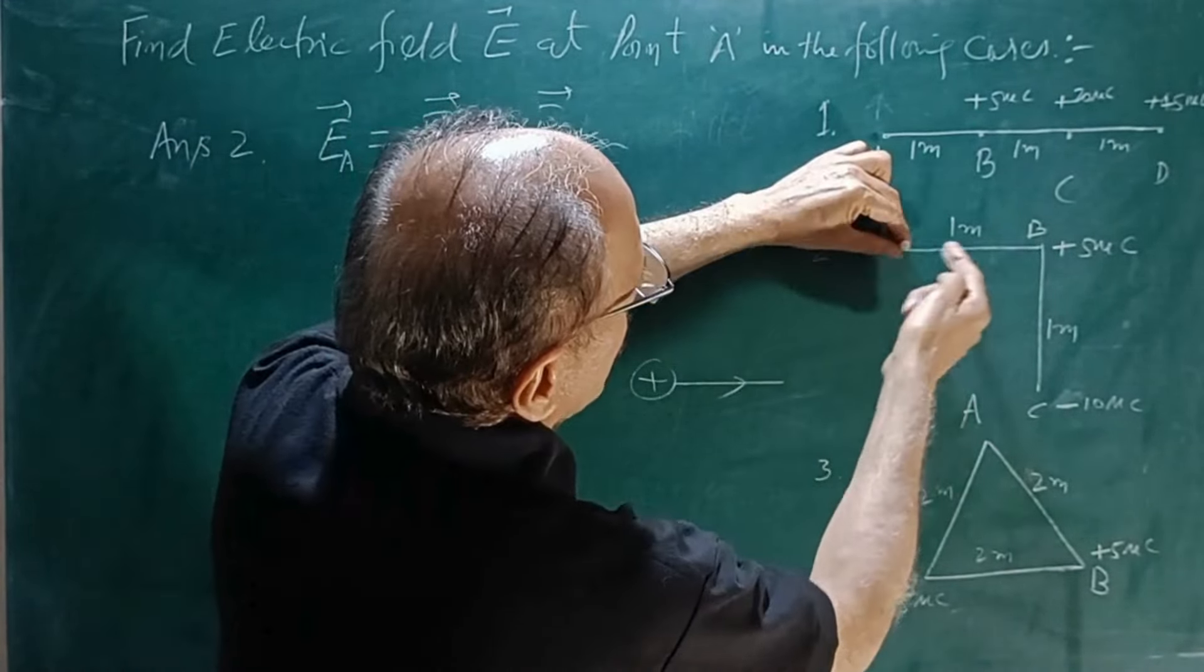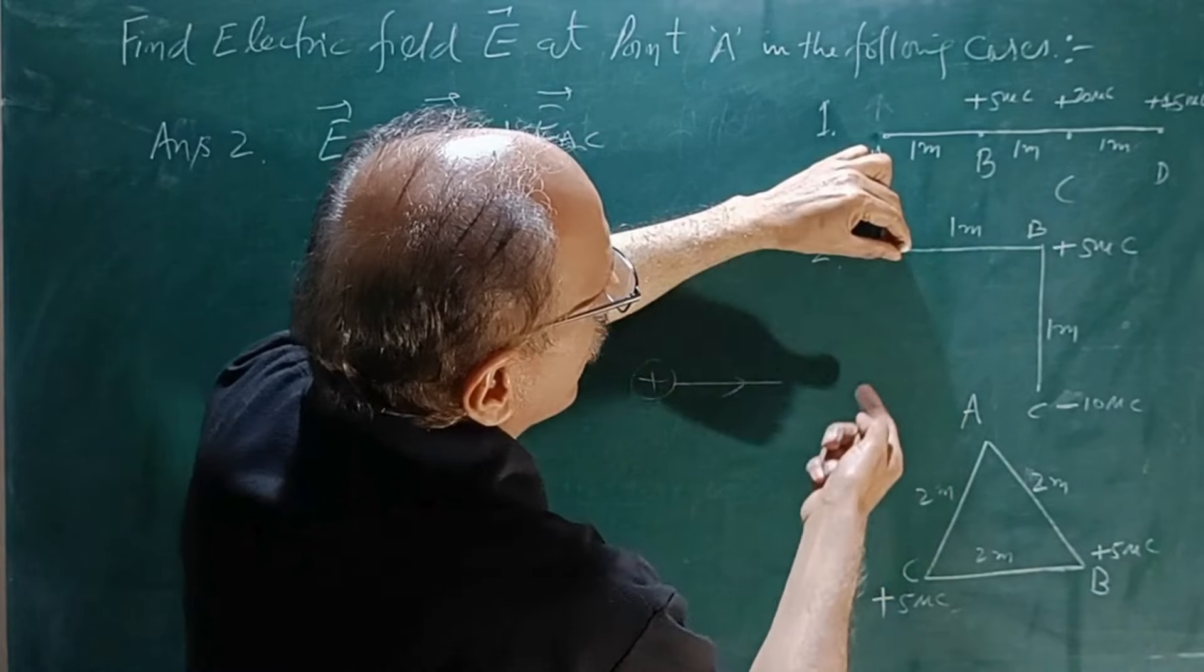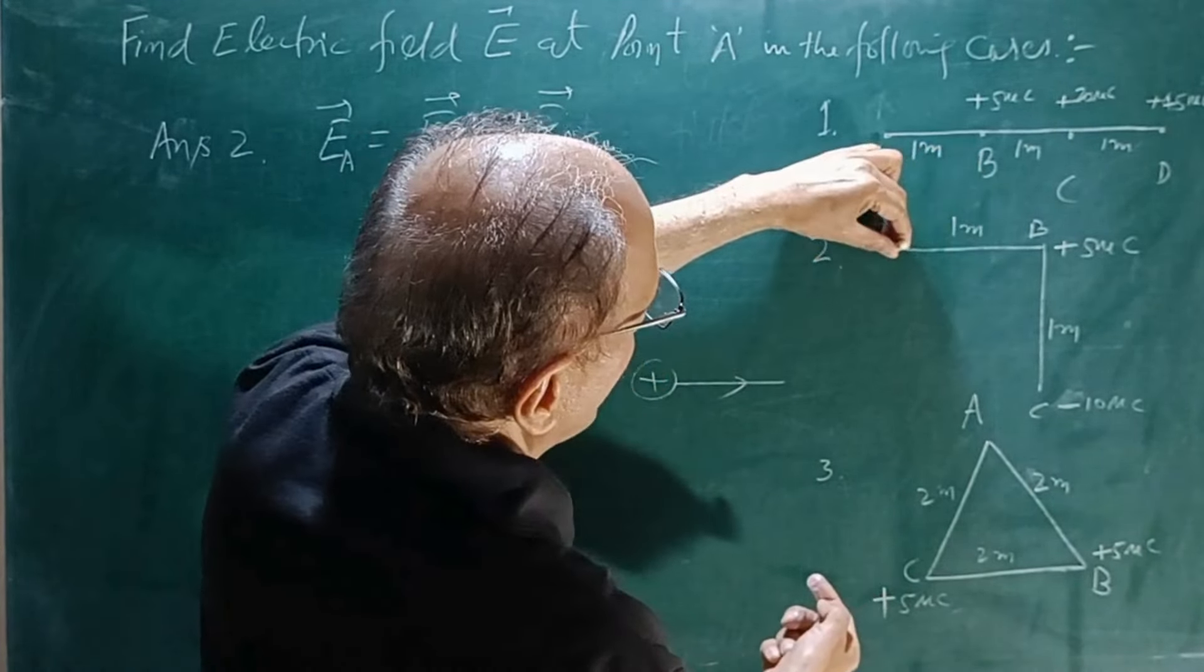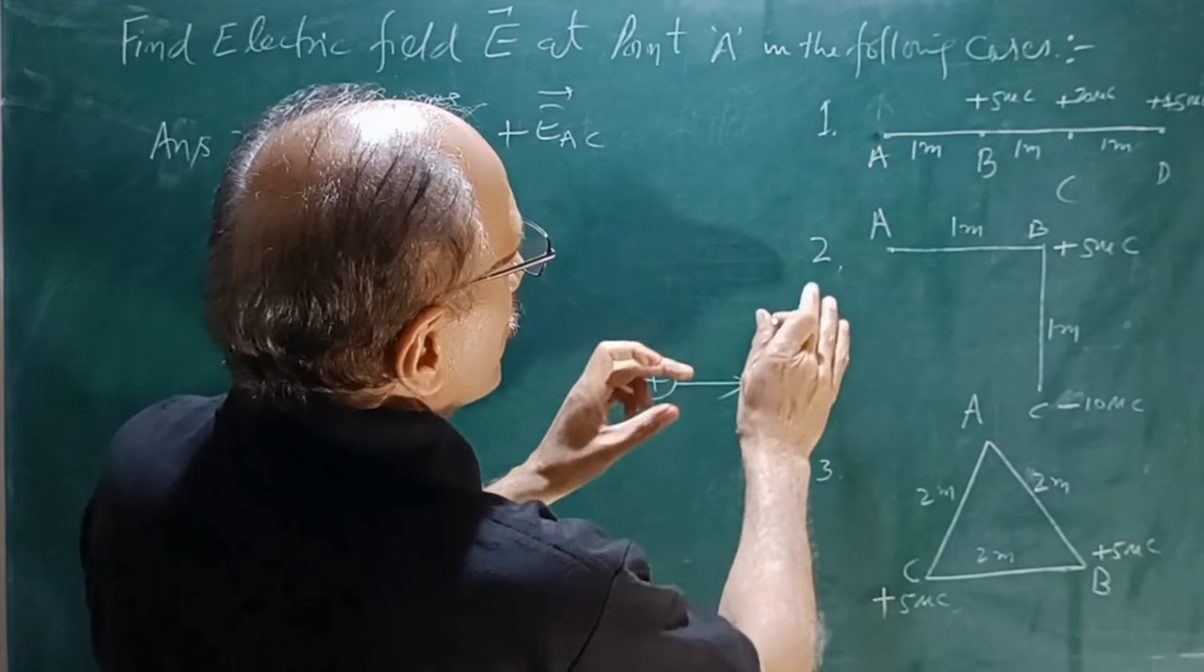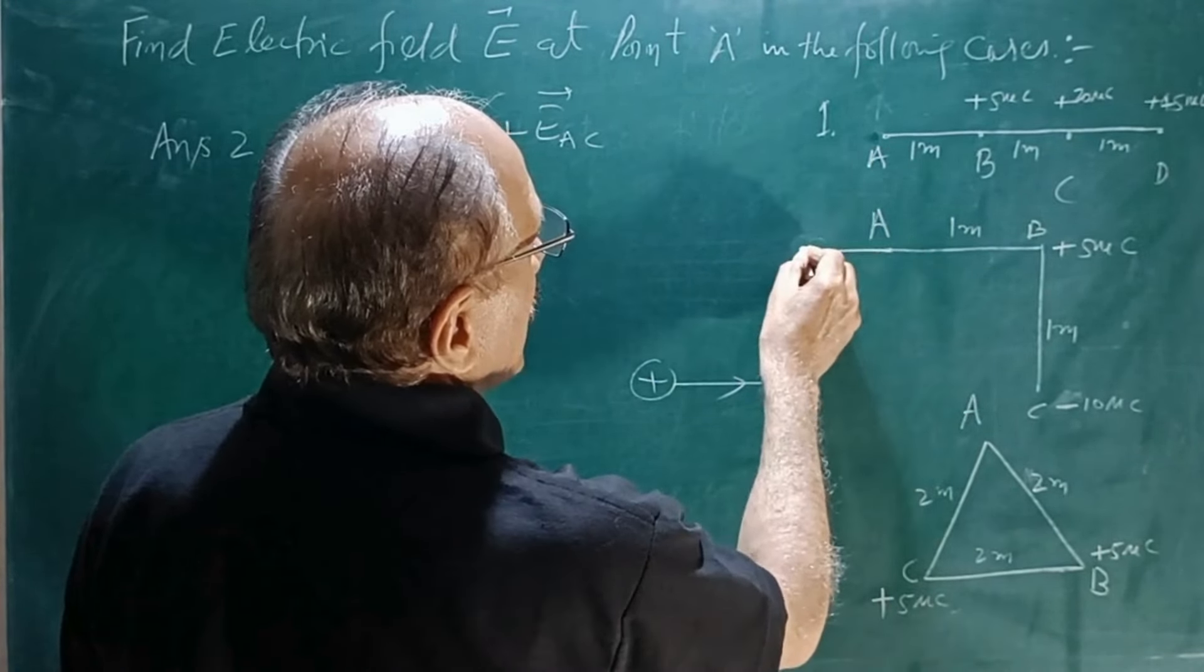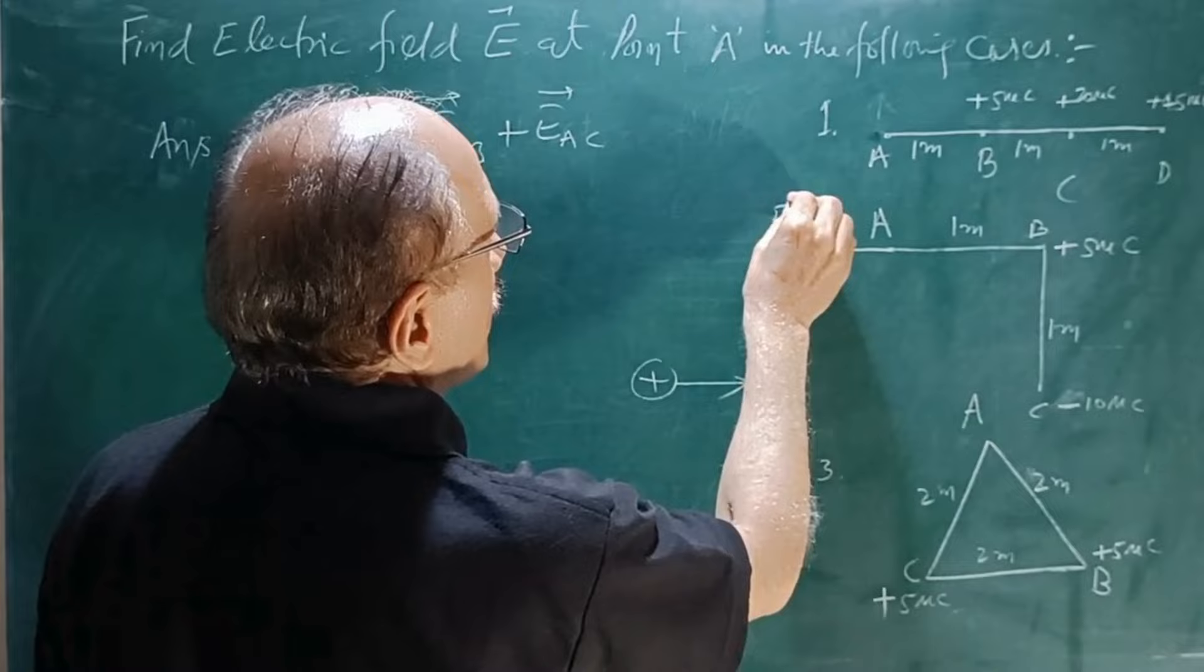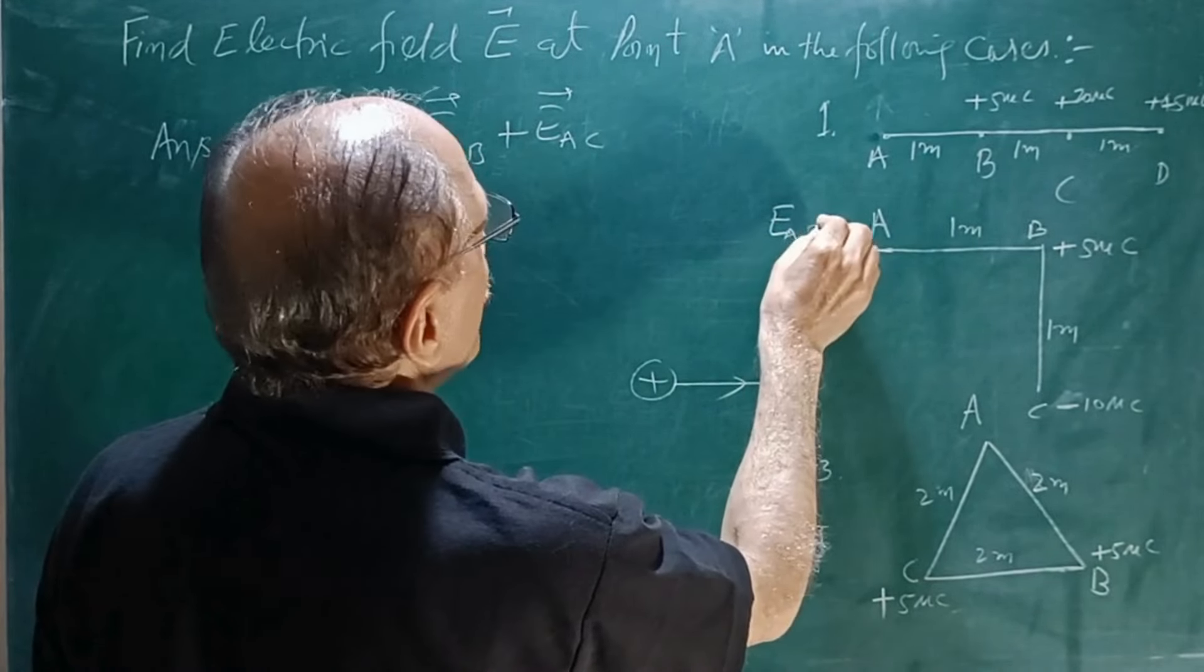So that means this pen has to be away from B. Away from B will be this side. So this is the electric field at A due to B.